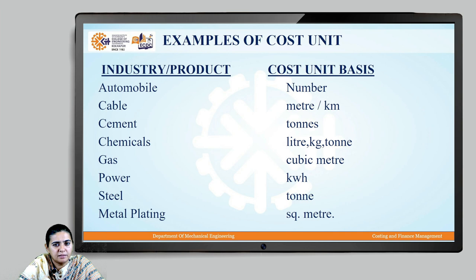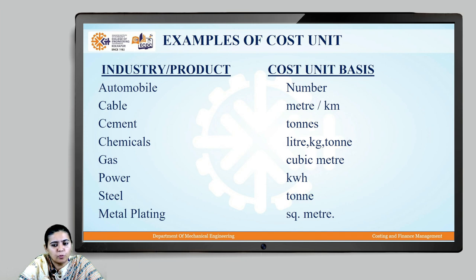For a gas industry, the cost unit basis could be cubic meters of gas. For a power industry, it could be kilowatt hours of power. For a steel industry, the cost unit basis could be tons. For a metal plating industry, it could be square meters.